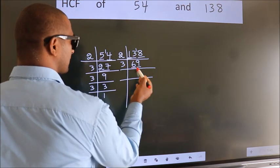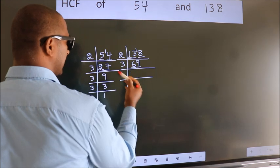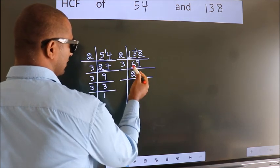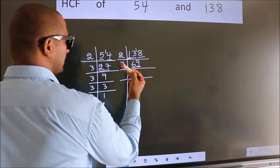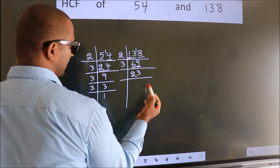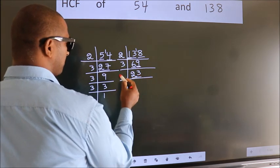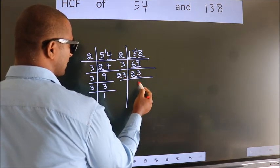First number 6. When do we get 6 in 3 table? 3 times 2 is 6. The other number is 9. When do we get 9 in 3 table? 3 times 3 is 9. 23 is a prime number. So 23 times 1 is 23.